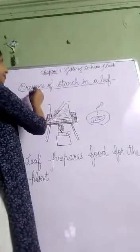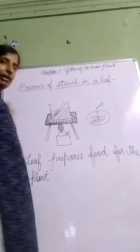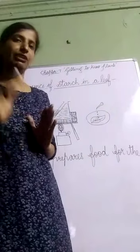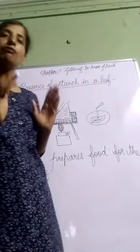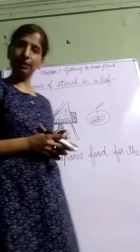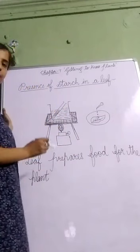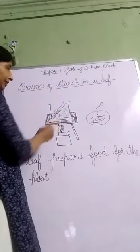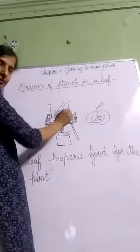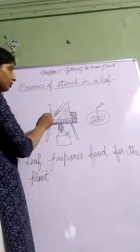In this activity, we will prove the presence of starch in a leaf. For this activity, we require a spirit lamp, a tripod stand, wire gauze, a beaker, water, a test tube, and spirit — or you can say alcohol.